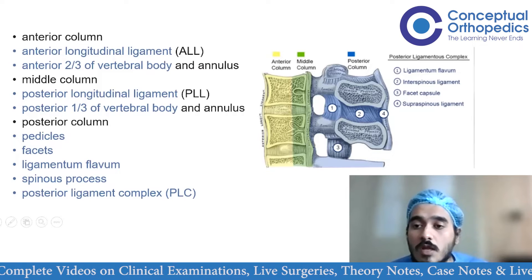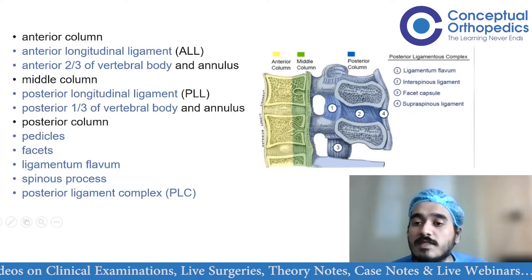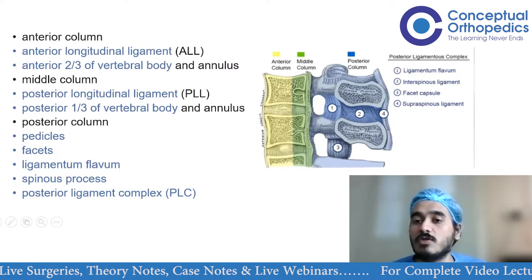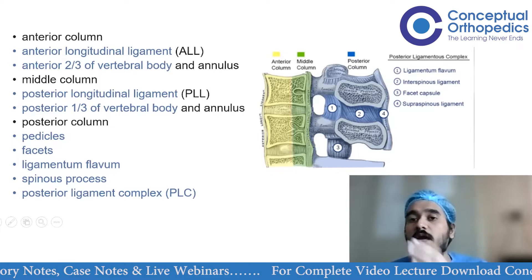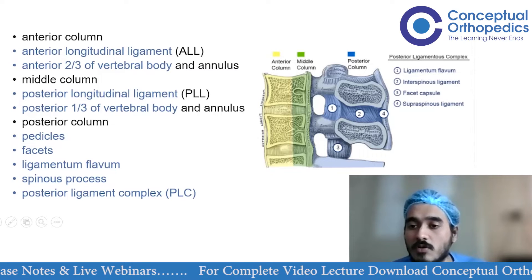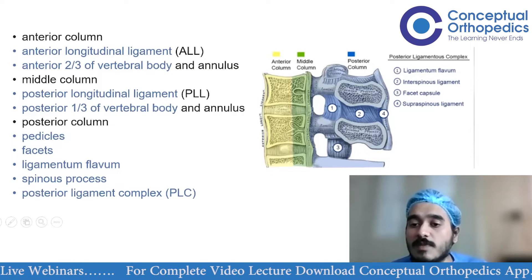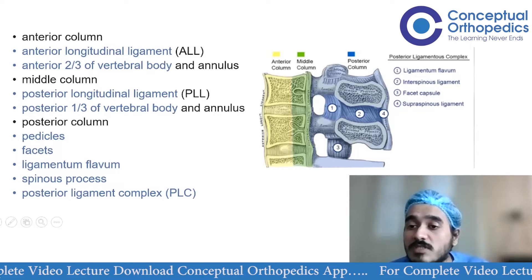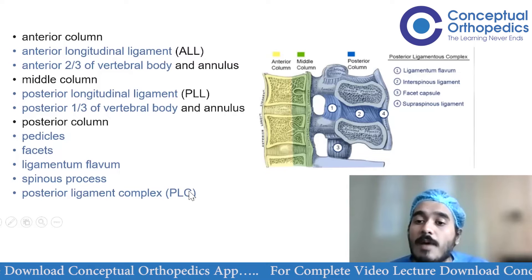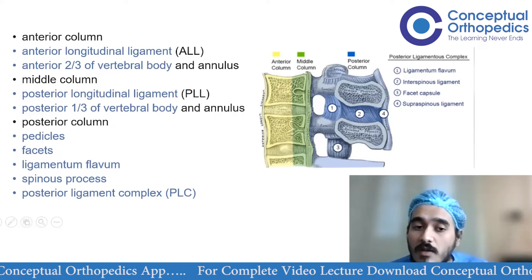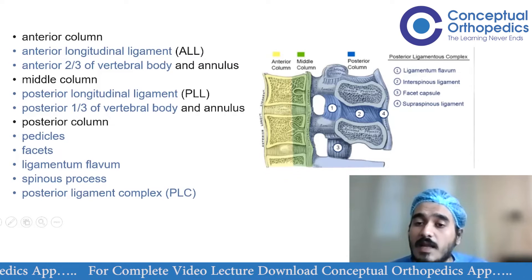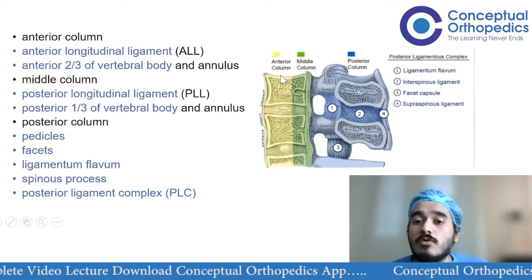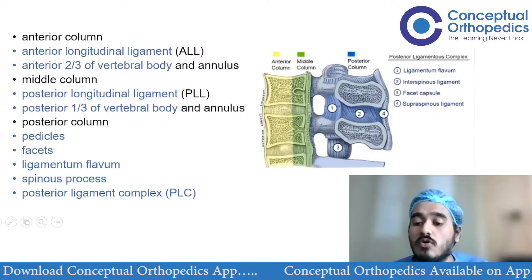The four ligamentous parts of the posterior ligamentous complex are: number one, the ligamentum flavum (yellow ligament); number two, the interspinous ligament; number three, the facet capsule; and number four, the supraspinous ligament. The spinous processes, pedicles, and lamina also form part of the posterior column. Remember to draw this diagram in the exam to score better.